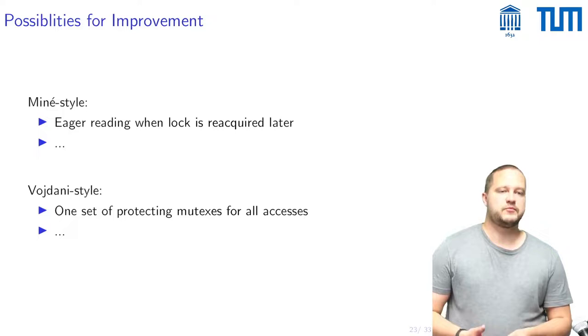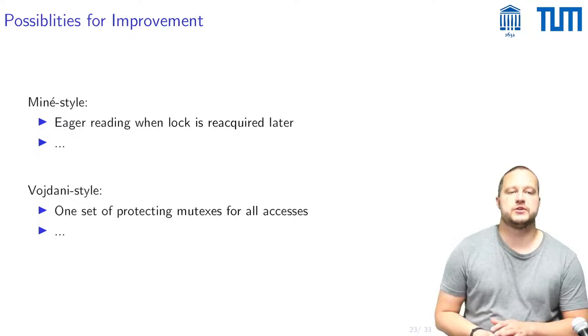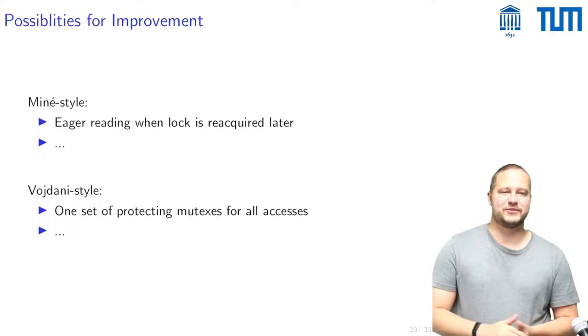On the other hand for this Vojdani style of analysis the obvious limitation to lift is requiring one set of protecting mutexes for all accesses.